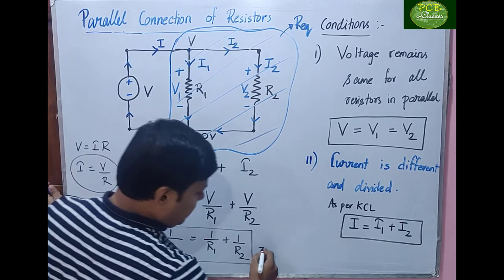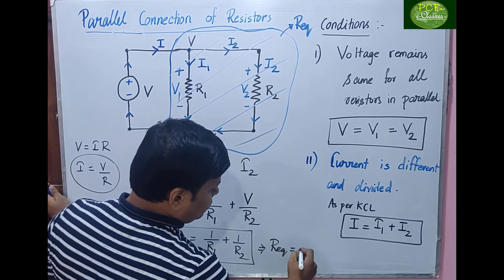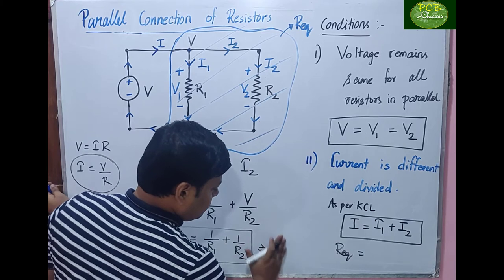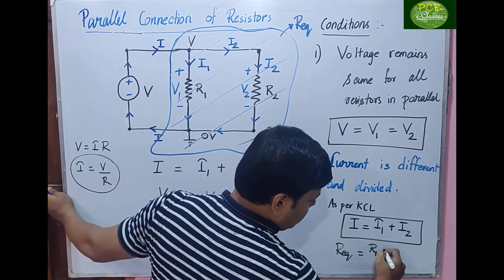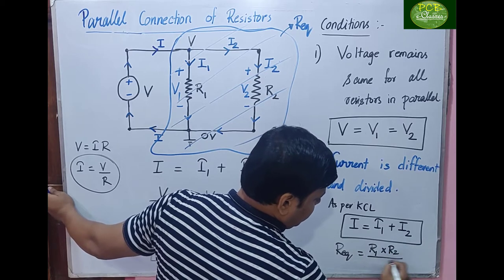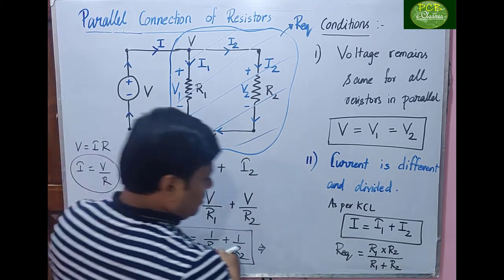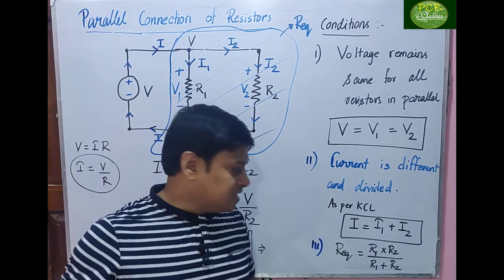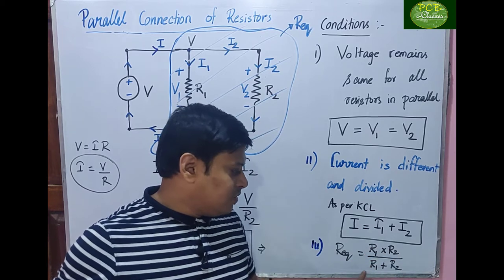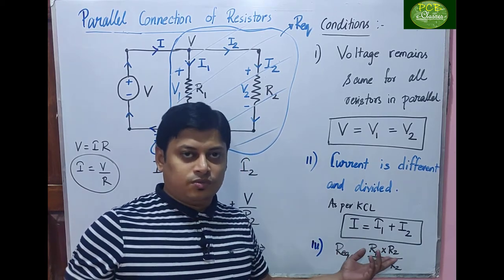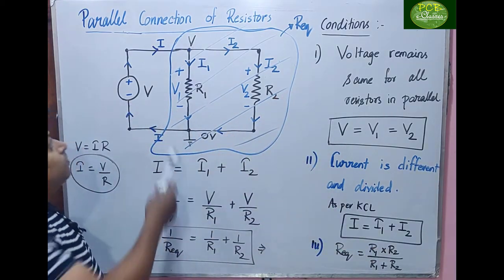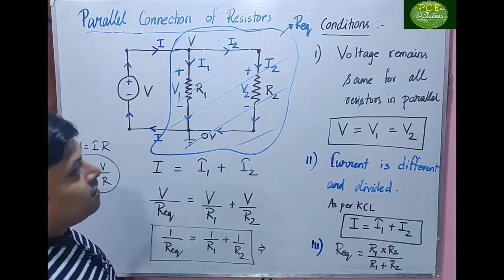This implies R_equivalent = R1 × R2 / (R1 + R2). This is what we state as the third condition for a parallel network. If it is a parallel combination of resistors, the formula for equivalent resistance is R_eq = R1 × R2 / (R1 + R2). These are the three conditions to take care of while solving problems on the parallel connection of resistors.